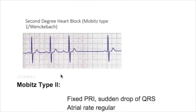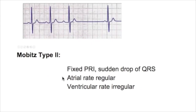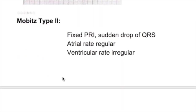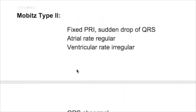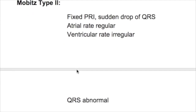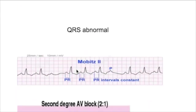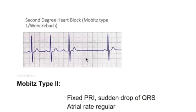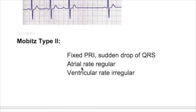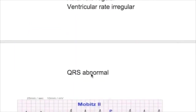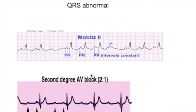In Mobitz type two second degree heart block, there is a fixed PR interval with a sudden drop of QRS. The PR interval is prolonged but fixed, and then there is a missed QRS. The atrial rate is regular while the ventricular rate is irregular because the QRS is missing.